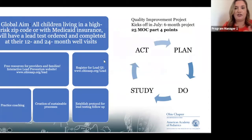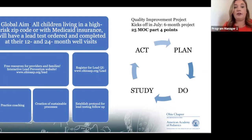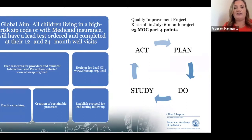I also wanted to take the time to talk about our quality improvement project that we will be launching in July. This is a six-month project for primary care practices and we are offering 25 MOC Part Four points. The global aim of our project is for all children living in a high-risk zip code or with Medicaid insurance to have a lead test completed and ordered at 12 and 24-month well visits. We have an interactive lead prevention website at www.ohioaap.org/lead.